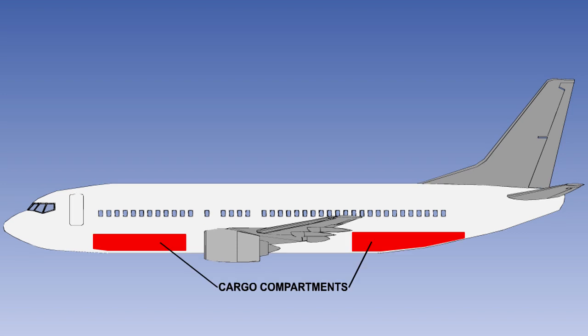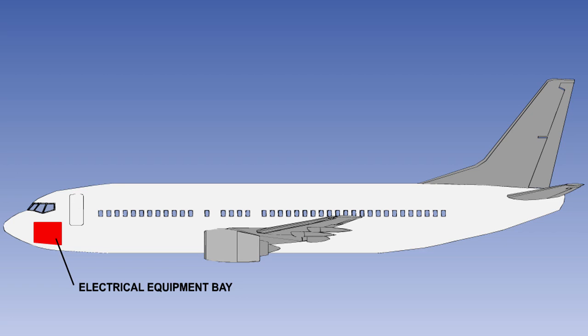The areas on aeroplanes usually fitted with smoke detection systems are the cargo and baggage compartments, electrical equipment bays, and toilets.